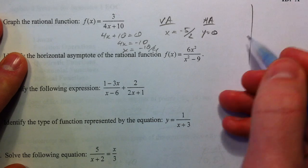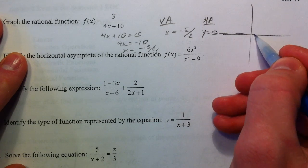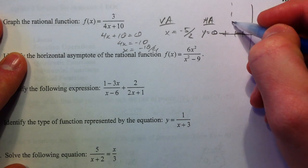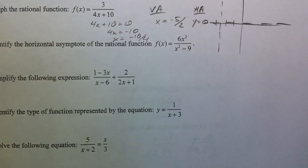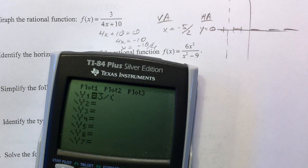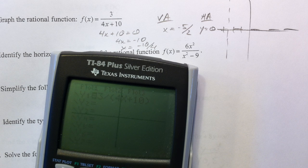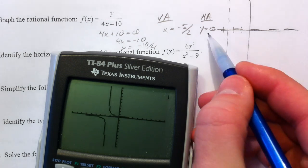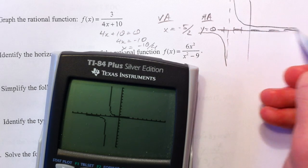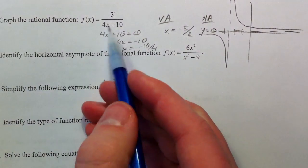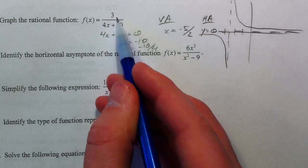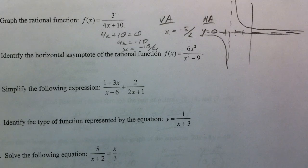And so you're going to be able to graph this by, here's your horizontal asymptote. Negative 5 halves is negative 2 and a half. And so, using your calculator as an aid, 3 divided by 4X plus 10. You could also utilize your Y-intercept if you wanted to, which, if you plugged in 0, you'd get 3 tenths. But it's really not that big of a deal.